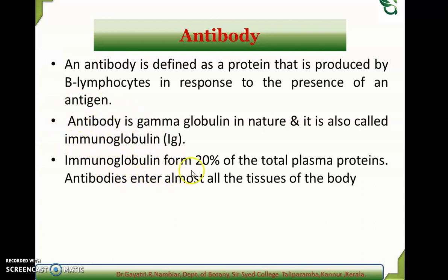Immunoglobulins form 20% of the total plasma proteins. Antibodies enter almost all tissues of the body and are found in serum, body fluid, tissues, etc. These antibodies are produced by vertebrates only, synthesized by B lymphocytes and secreted by plasma cells.